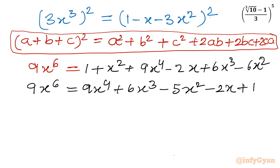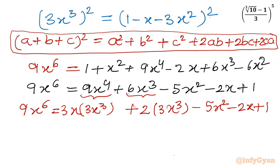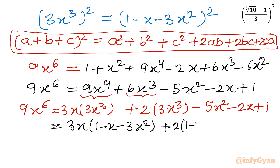Now there are 2 terms where I will apply iteration. For 9x power 4, I write 3x cube times 3x, and for 6x cube I write 2 times 3x cube. Straight away we will put the value of 3x cube. So it will become 3x times (1 minus x minus 3x square) plus 2 times (1 minus x minus 3x square), and remaining terms minus 5x square minus 2x plus 1. The left hand side is 9x power 6. Let's expand.